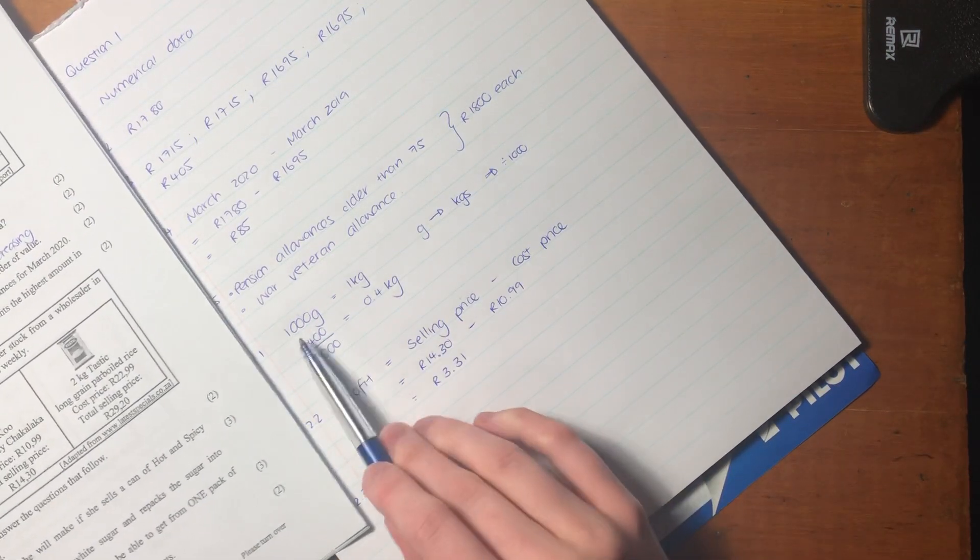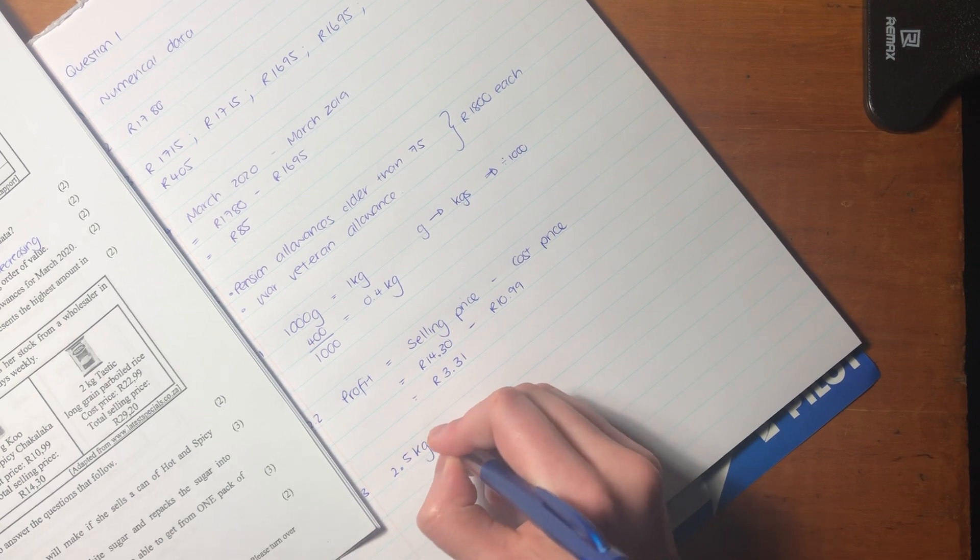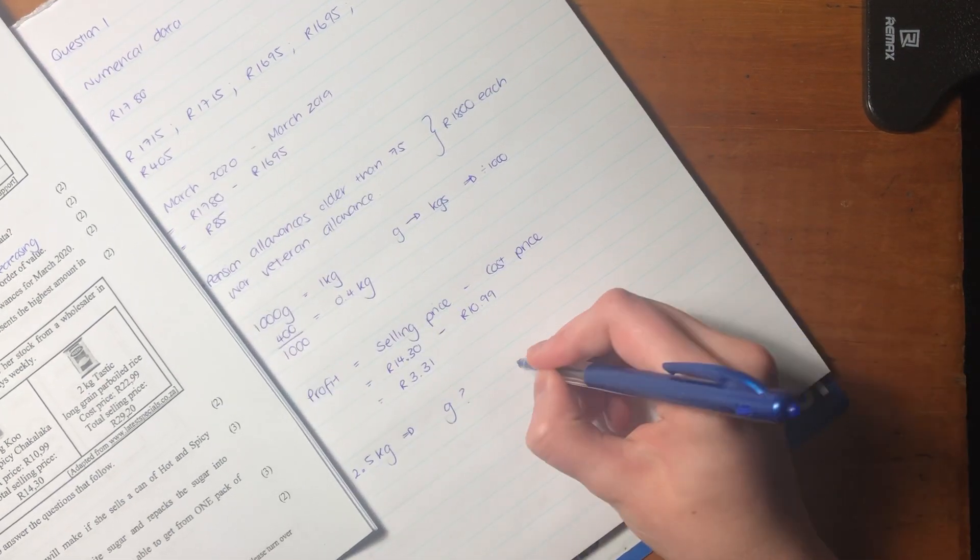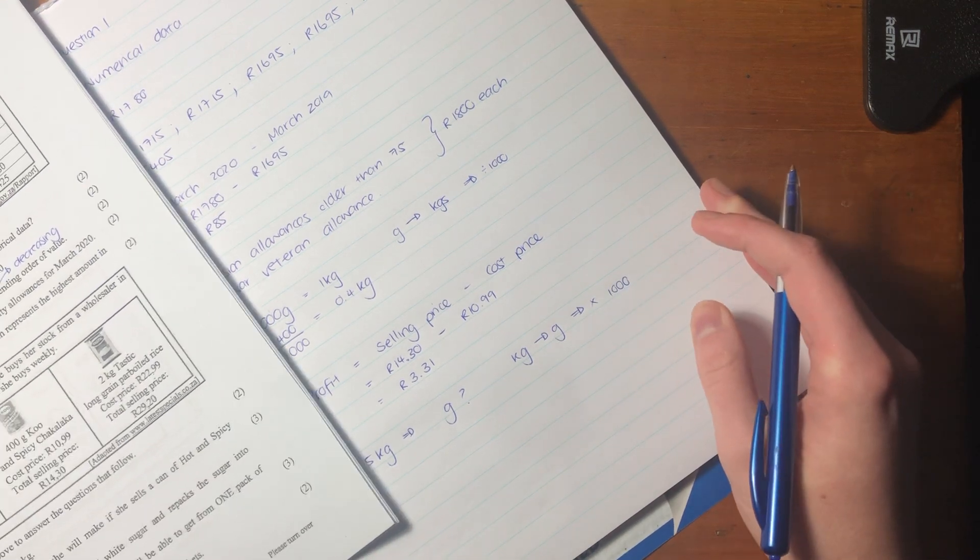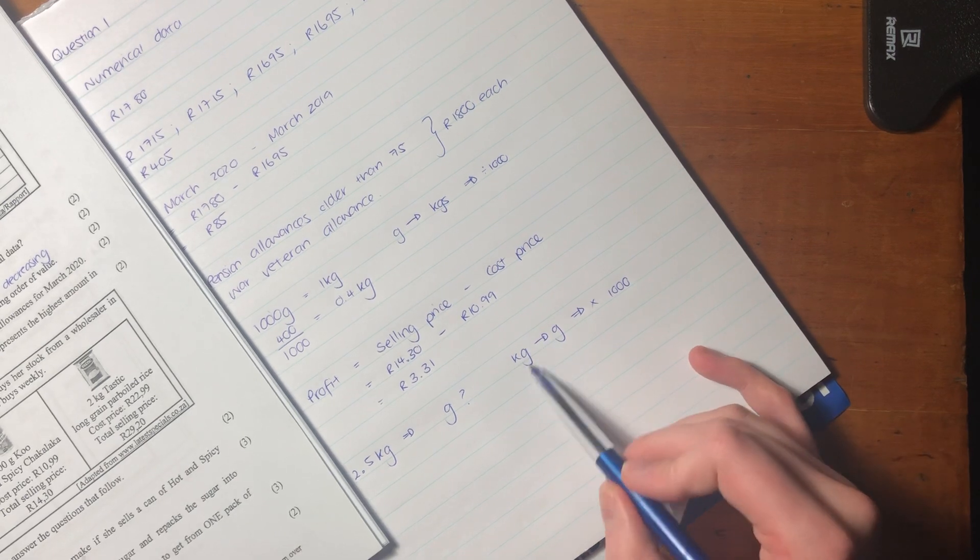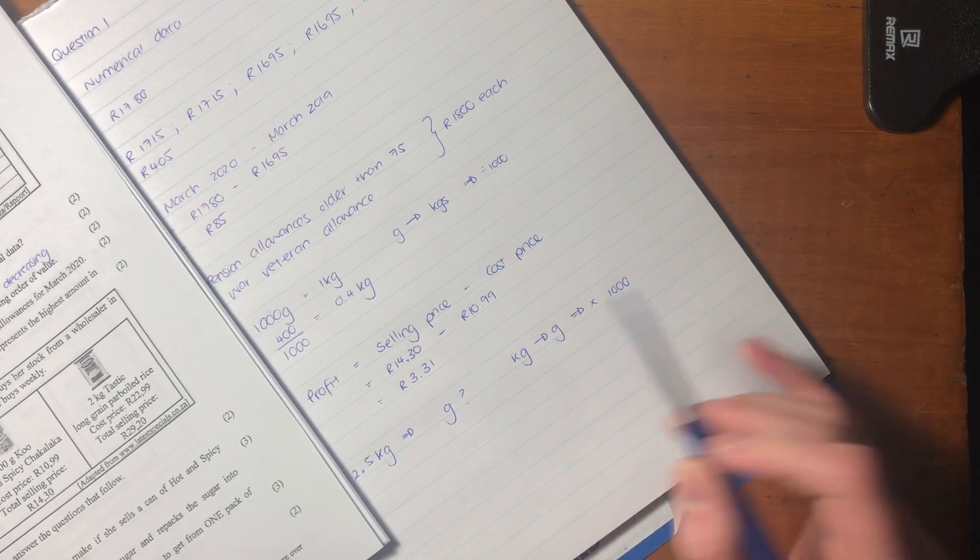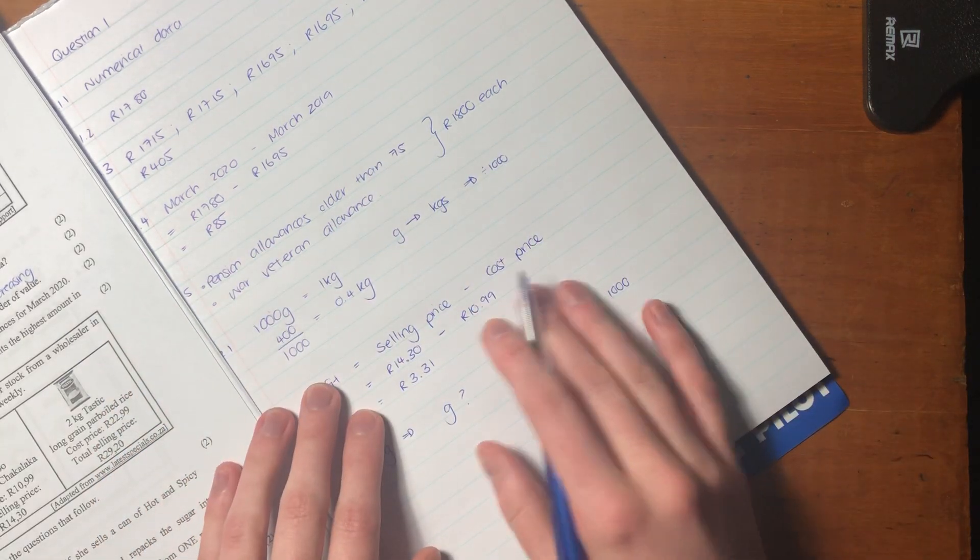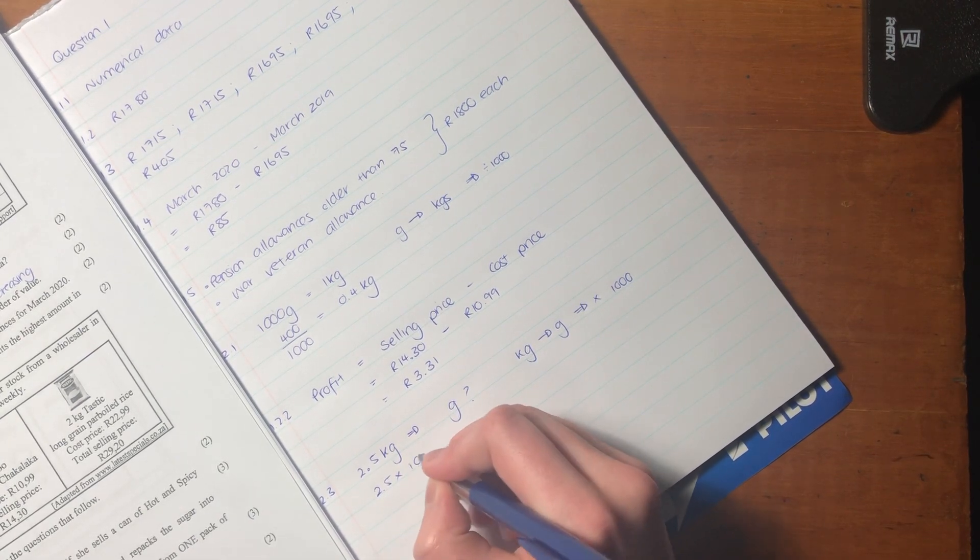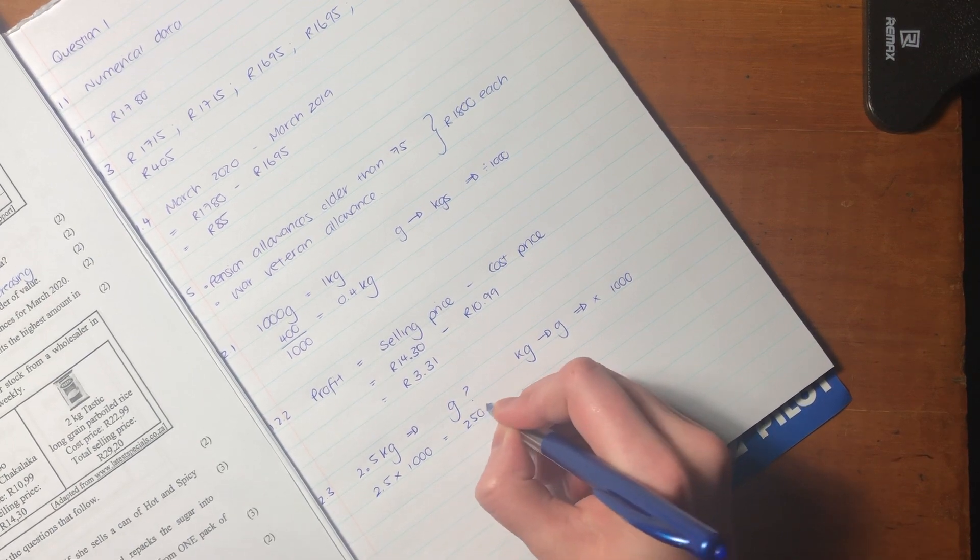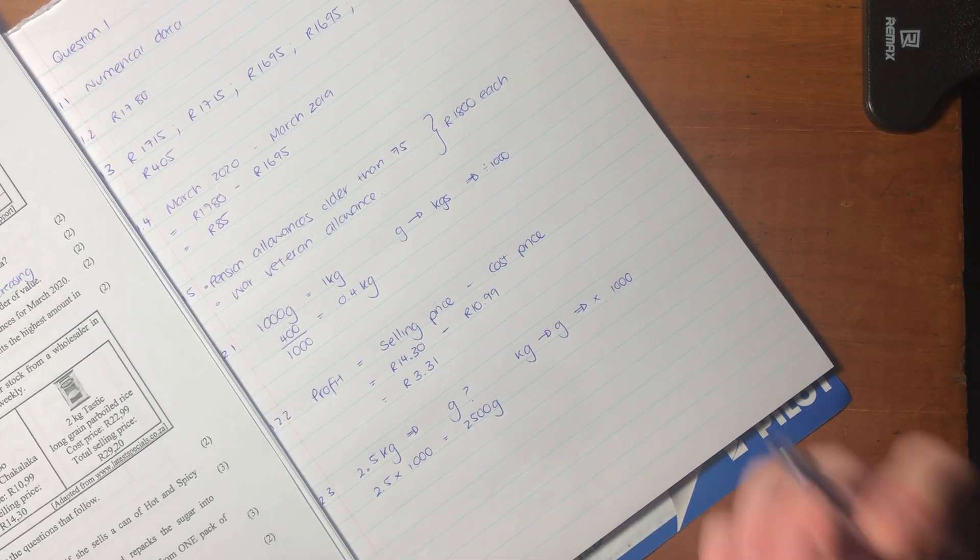The best thing to do is to convert the 2.5 kgs of sugar into grams. Then it'll be easier to say grams divided by grams to get the number of packets. We know that 1000 grams equals 1 kg. We want 2.5 kgs, and we want to find out the grams. When we're working from kilograms to grams, we have to multiply by 1,000. We're going from a bigger measurement to a smaller measurement. Therefore, we expect that there will be more grams than kilograms. We say 2.5 times by 1,000, and that gives us 2,500 grams.